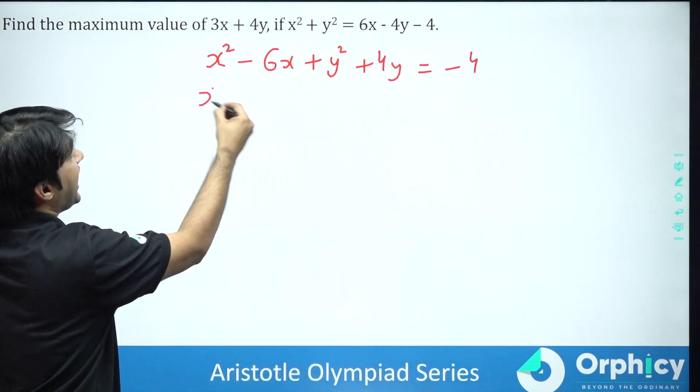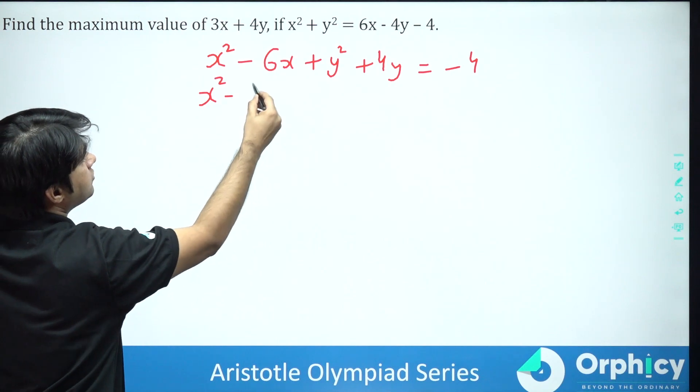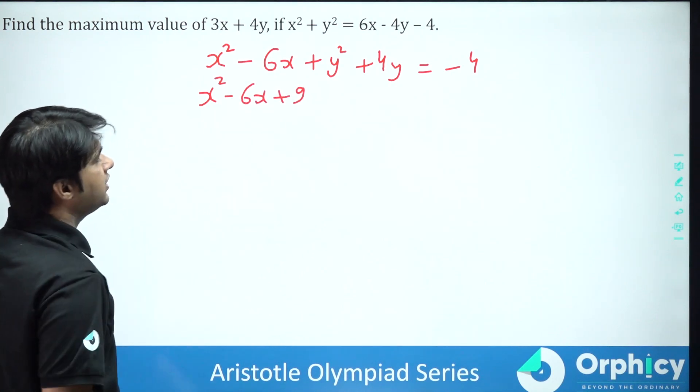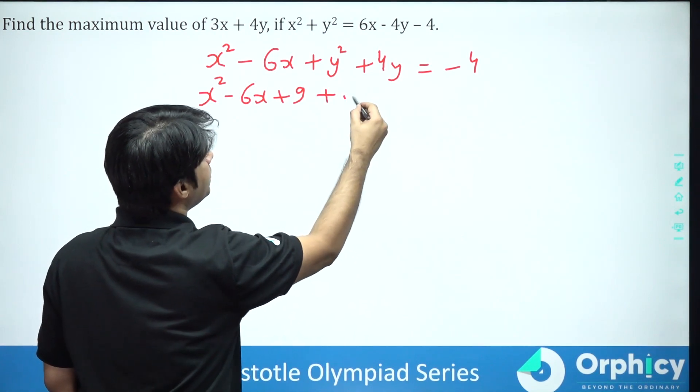Now this can become a perfect square. So I have to do this for this to be a perfect square. Similarly, this can also be a perfect square.